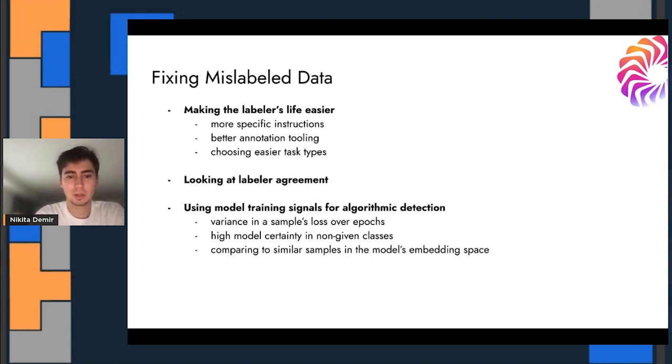And finally, there's been research in algorithmically detecting these. That can come from lots of different ways of doing this, but it all basically comes from using the model's training signals to inform an algorithm which samples are mislabeled. For example, you could look at the variance and the sample's loss over the epochs. Another very common method is to look at how certain the model is in the non-given class, as in if the labeler said it was dog, but the model very strongly thinks it's cat. That's a signal that indicates perhaps the labeler was wrong. And finally, there's also a way of comparing two similar samples from the dataset using the model's embeddings. This can also indicate whether if all the samples that look just like this have a differing label, well, there's likely some error.